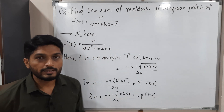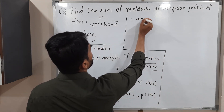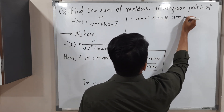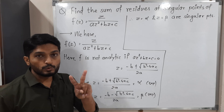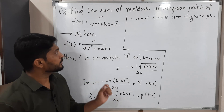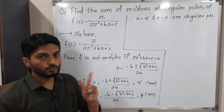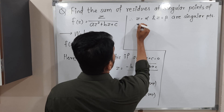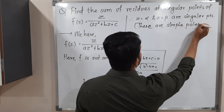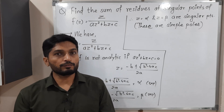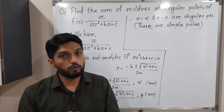So now it's easy to say the singular points are alpha and beta. Therefore z = alpha and z = beta are singular points. The degree of the polynomial is 2, so it was expected to get two singular points. These are actually poles — alpha is a pole of order 1 and beta is also a pole of order 1, so these are simple poles. After that we have to calculate the residue. The definition involves Laurent series expansion which is very hectic, but fortunately for poles we have a separate formula.